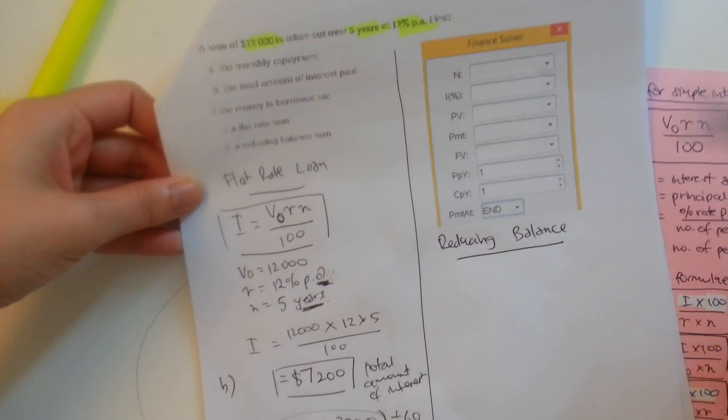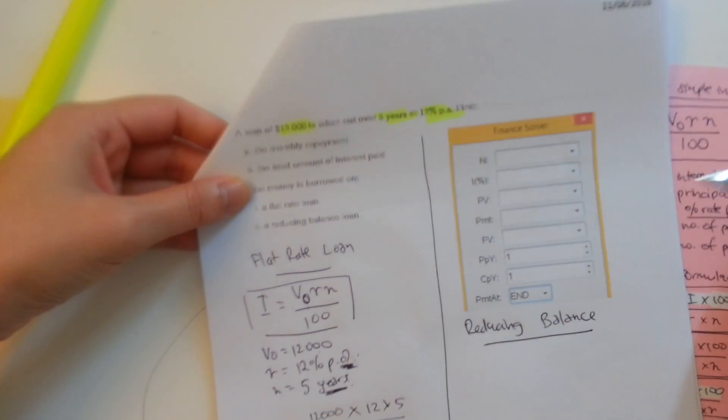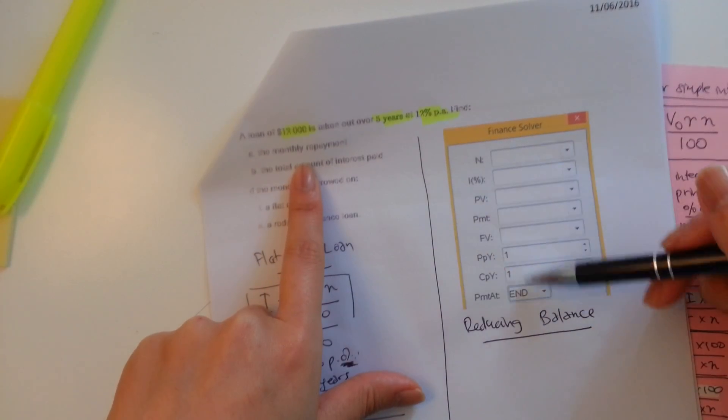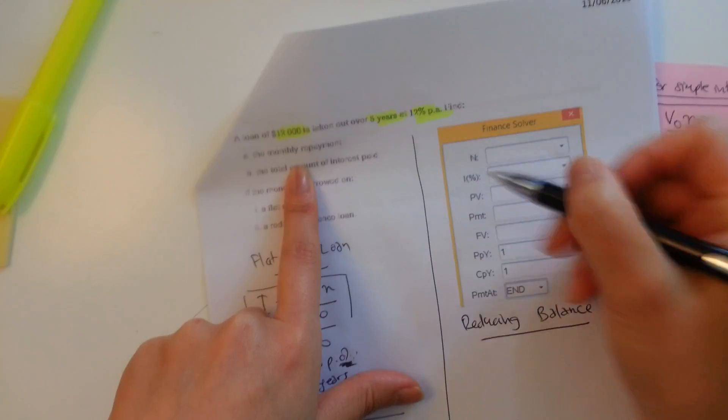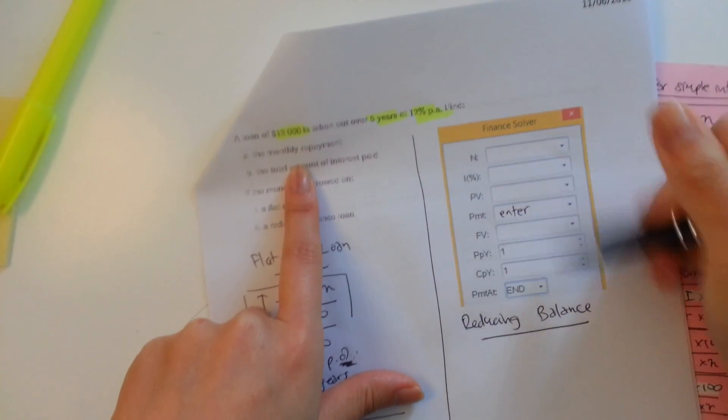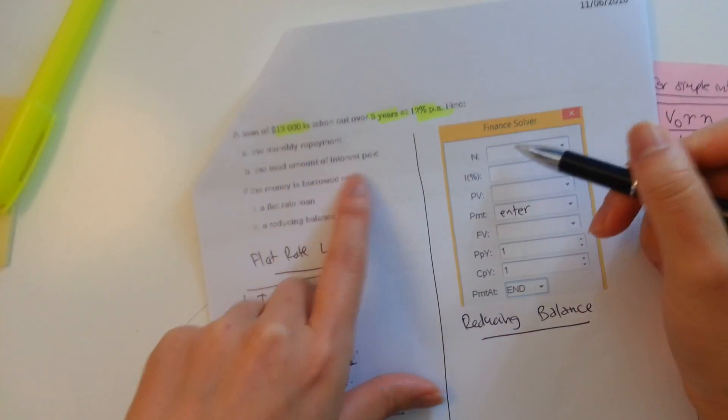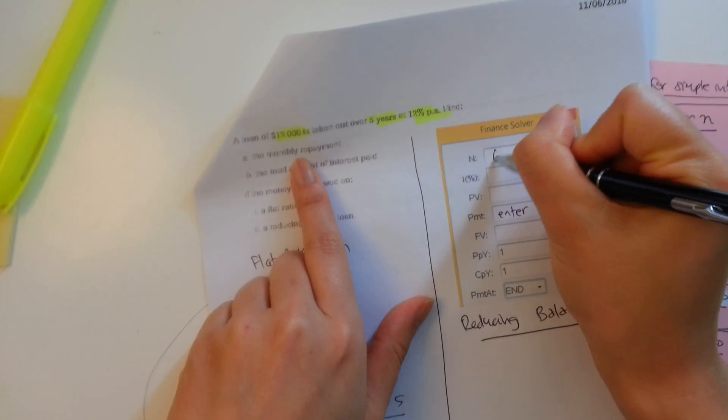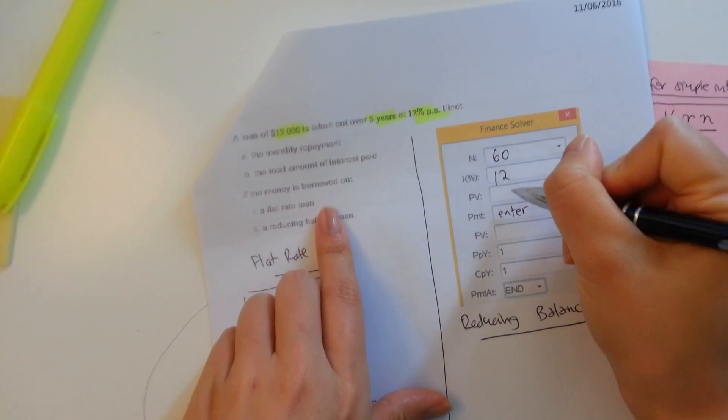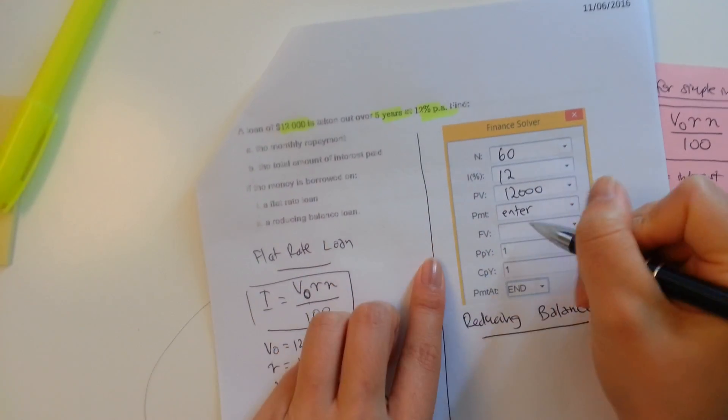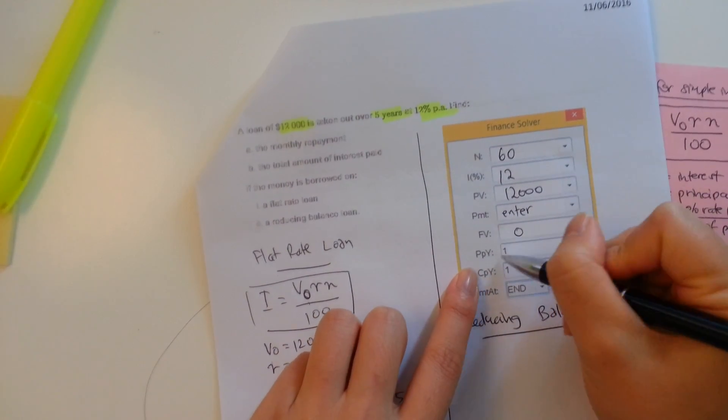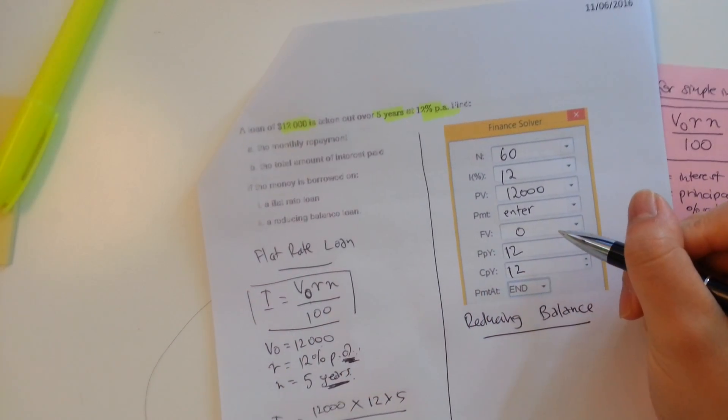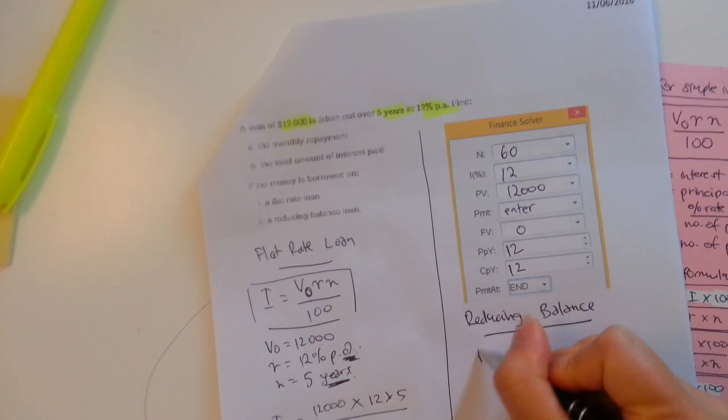Now, for reducing balance, hopefully you should get the hang of this by now. We want to find the monthly repayment. So we're going to obviously want to hit enter here. And we fill in the rest. So N is five years multiplied by, if it's monthly, then it's going to be 60. Interest is 12%. Present value, $12,000. We set the future value to zero. And payments per year is going to be 12 since monthly. We hit enter and we get an answer at PMT or payments at $266.93, which is going to be your monthly repayment.